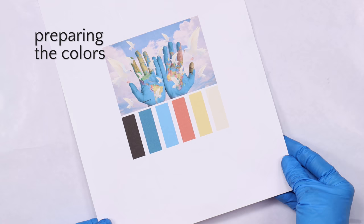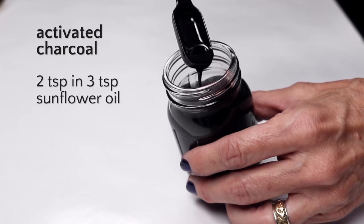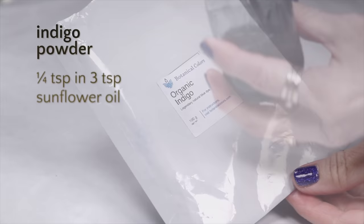I prepared eight different colorants, mixing each with either oil or water. The activated charcoal, indigo, and woad were mixed with sunflower oil, while the clays and titanium dioxide were all mixed with distilled water.